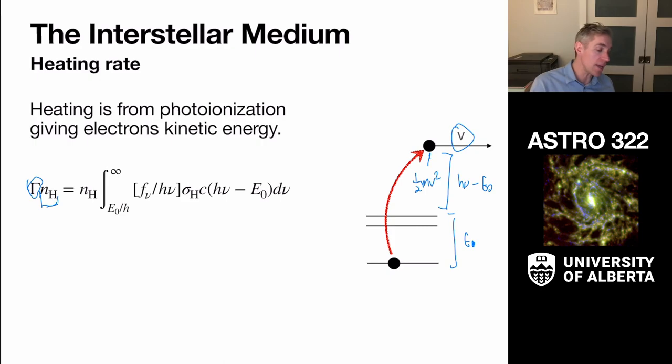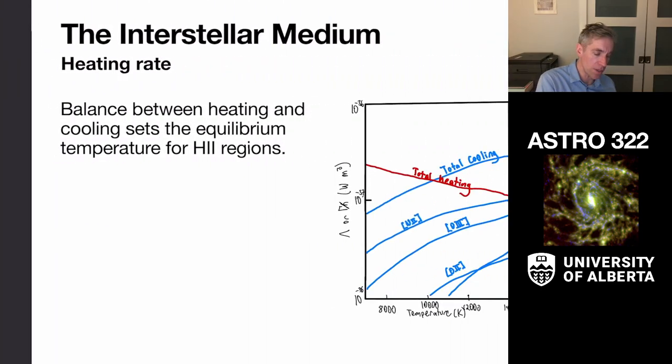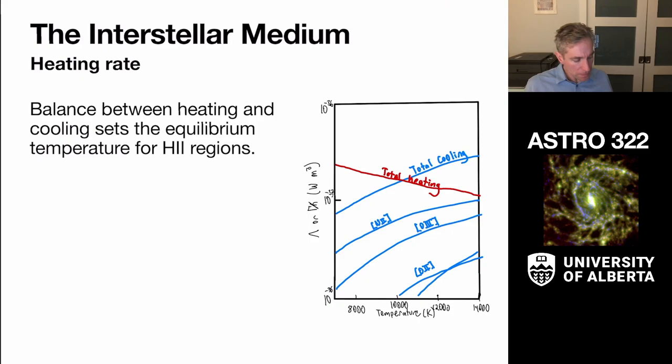So it only has one power of density in it. It's gamma times NH, whereas lambda had two powers of density tied to it. And they both give us a heat. This is a heating rate in units of watts per meter cubed.